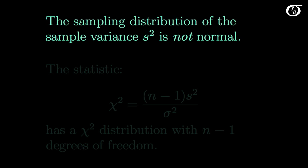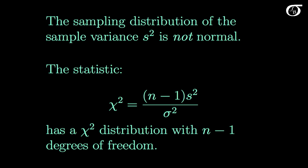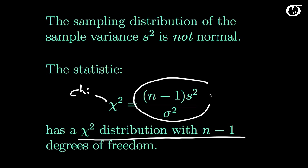We are going to have to do these intervals a little bit differently than the way we did confidence intervals for the mean. It can be shown that the chi-square statistic — chi being the Greek letter — the statistic (n minus 1) times S squared over sigma squared has a chi-square distribution with n minus 1 degrees of freedom, provided we are sampling from a normally distributed population. We are going to use that notion to construct confidence intervals for sigma squared.